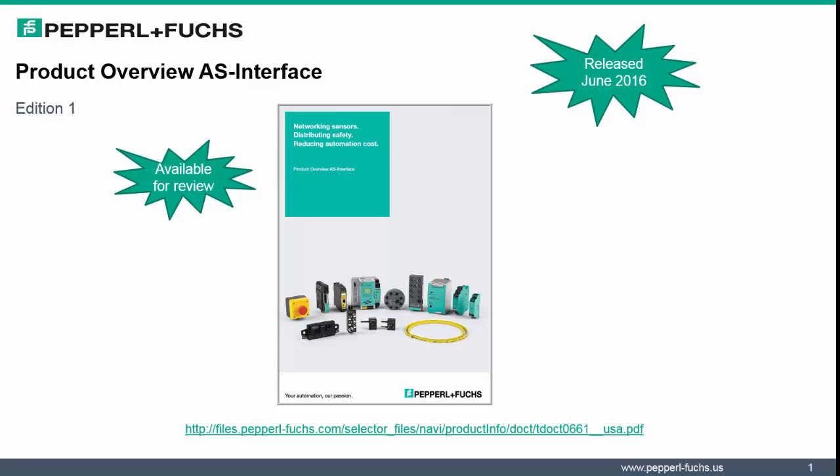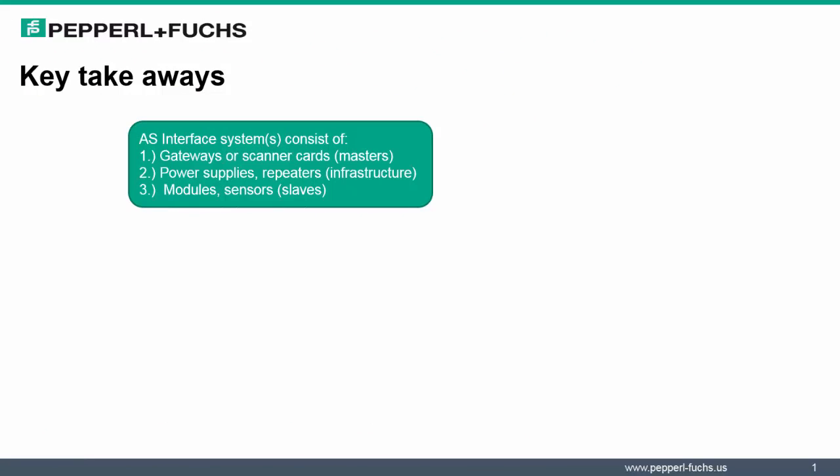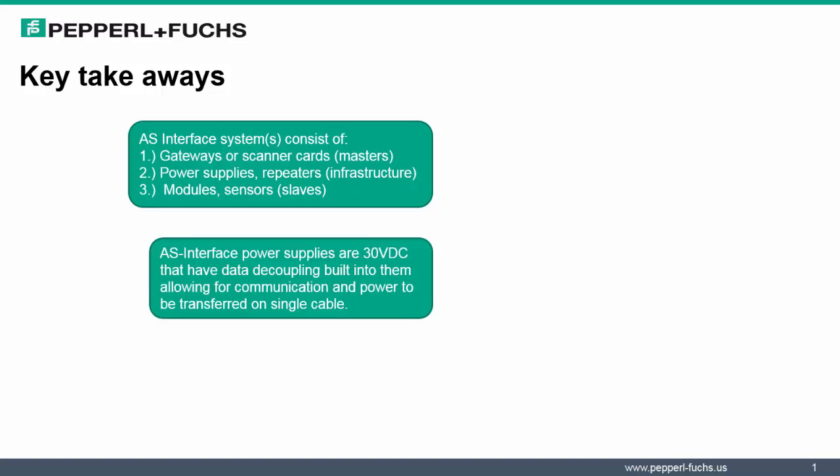So I wanted to finish off our webinar today by providing some key takeaways from this presentation. First, AS Interface consists of the following key components: Masters, Infrastructure and Slaves. That's very important as you consider building your AS Interface networks. A second key piece is surrounding AS Interface power supplies. Today we spoke that it is a unique power supply that has some data decoupling in it that enables both power and communications on a single cable. So keep that in mind as you're considering setting up your AS Interface networks.